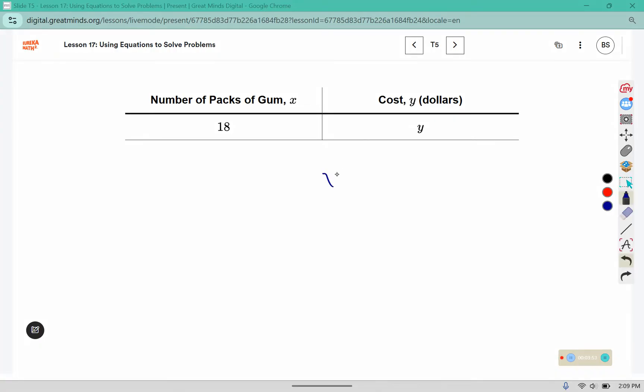Now that we know that constant of proportionality, we can write an equation using y equals 1.5x. We replace that k with the constant of proportionality. Then we can go in and we can change out the x value for the x value in this table and solve it for y. Well, these parentheses mean to multiply, and 1.5 times 18 gives us 27. So the cost for 18 packs of gum would be $27.